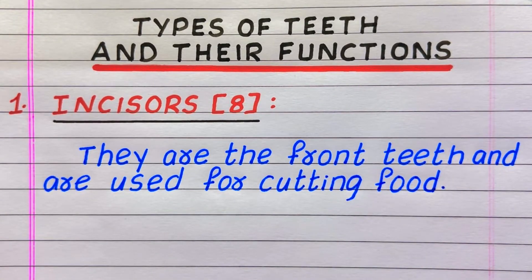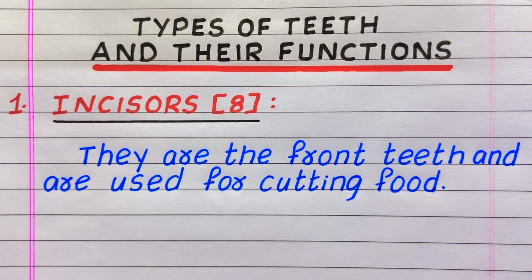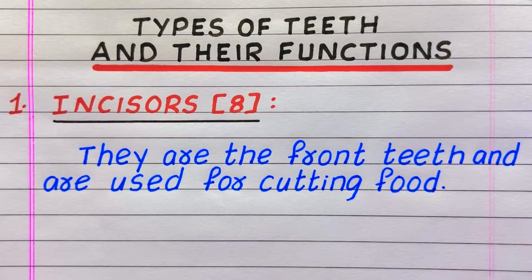The first type of teeth are called incisors. Incisors are eight in number. They are the front teeth and are used for cutting food.